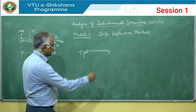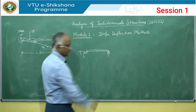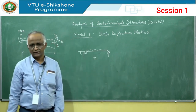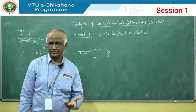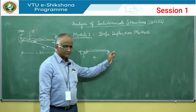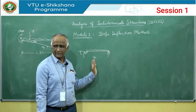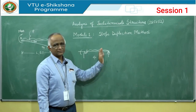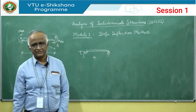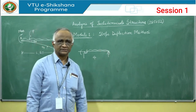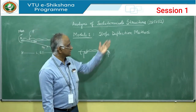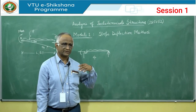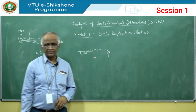If we add a reaction at support B — a simple reaction — the number of reactions becomes 4. Once it crosses 3, it becomes indeterminate; you cannot solve it using only the equations of equilibrium. We call this a proper cantilever beam. All structures beyond this are considered indeterminate. In your earlier 4th semester, we solved determinate structures; now we will solve indeterminate structures.